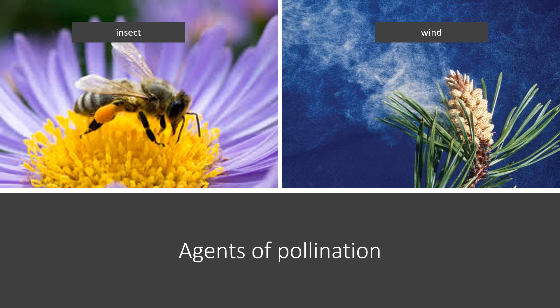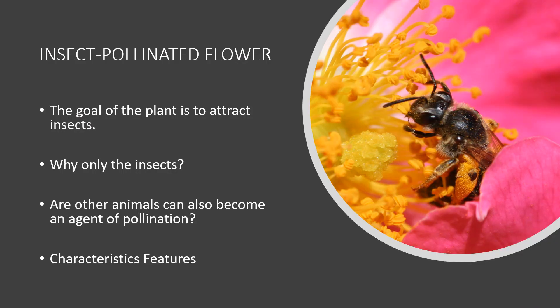Let us consider the characteristic features of a plant whose flower chooses insect as its agent of pollination. If a flower uses insects for pollination, its characteristic features must be able to attract insects. We will answer the question of why only insects — and not other animals — after we learn about the characteristic features of an insect-pollinated flower.